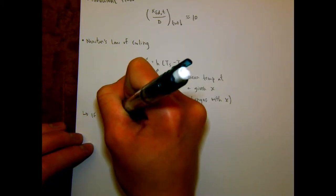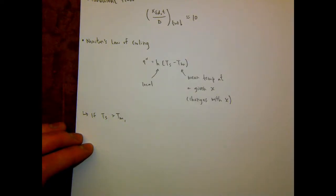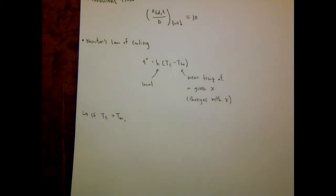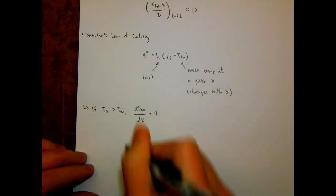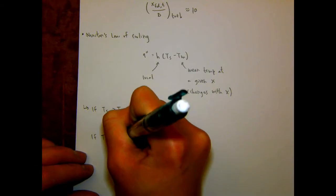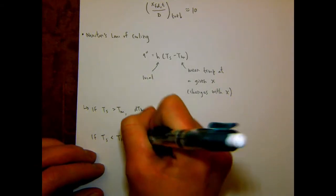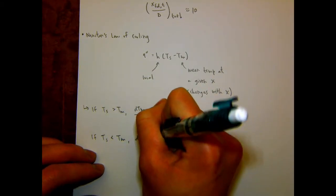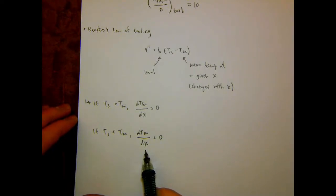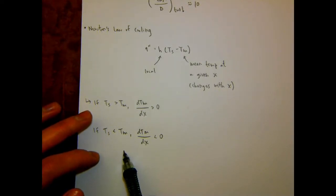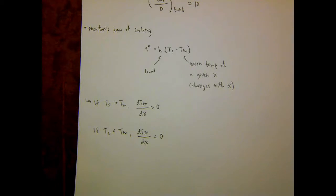So if the surface temperature is greater than the mean temperature, then you're going to have heat transfer occurring to the fluid — so the fluid is being heated — and the gradient of the mean temperature with X increases. And then the opposite is obviously true: if the surface temperature is less than the fluid temperature, the fluid will actually be heating the surface and the mean temperature of the fluid is going to decrease with X. Remember, we're talking about these occurring within the bounds of our two boundary conditions — constant surface temperature and constant surface heat flux.